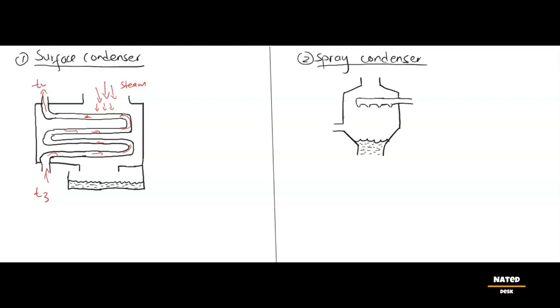As the steam comes into contact with the cool surface of the tubes, heat is transferred from the steam to the cooling water through the tube walls. This causes the steam to lose its heat energy and start to condense, or in other words, it starts to turn into liquid water.